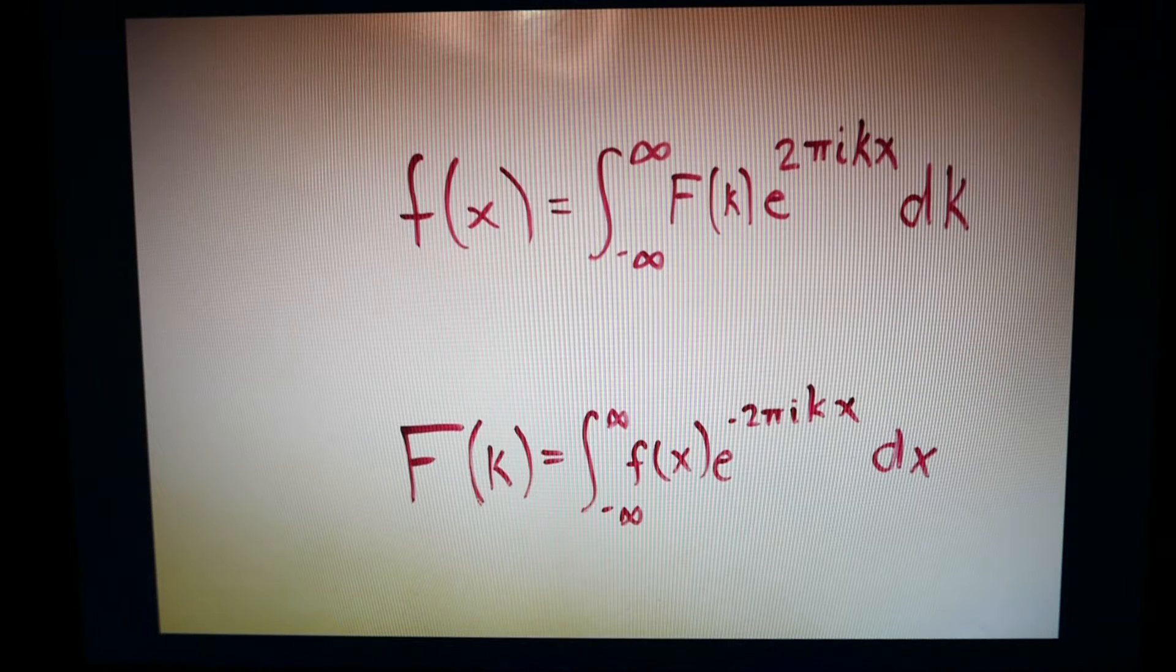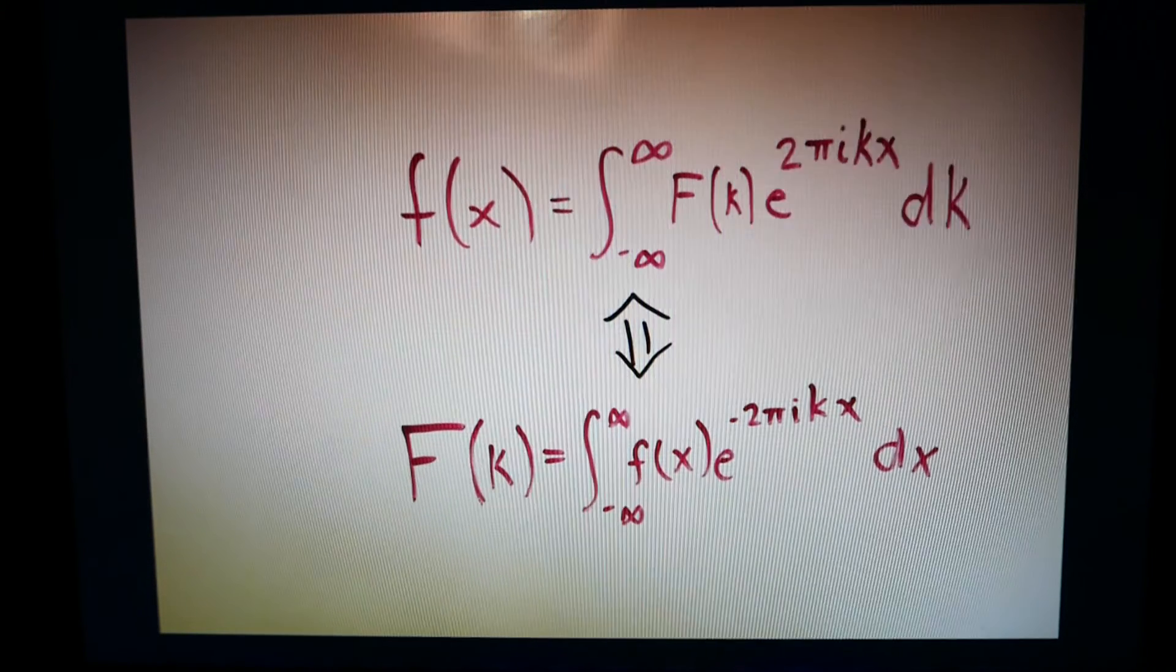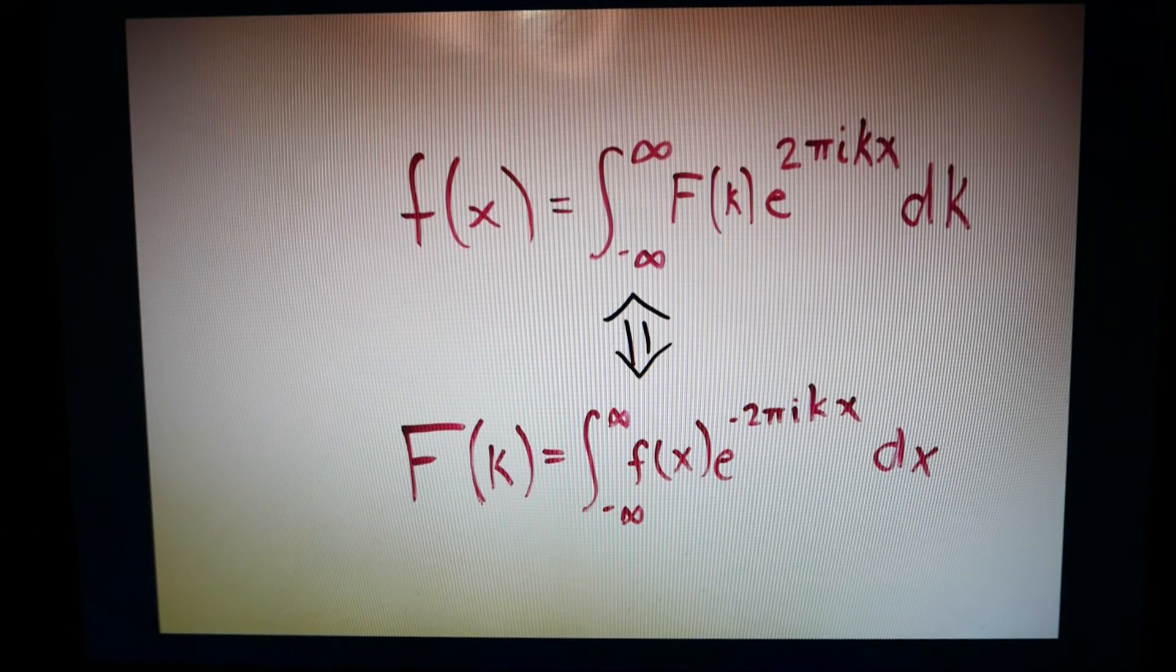A transform is a mapping between two different sets of data or domains. It can change information in the time domain, for instance, into information in the frequency domain. Rather than thinking of the Fourier transformation as a single equation, the concept should be thought of as two functions that are inverses of one another.